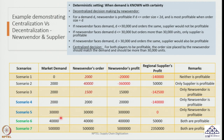Remember, this is a deterministic setting, which means the demand is known with certainty. In this specific example, we are looking at the news vendor's profitability occurring when the order size placed by the news vendor is more than the demand for sure, but less than twice the demand. We will examine this particular case in a bit more detail in the next slide.